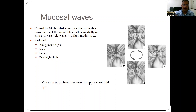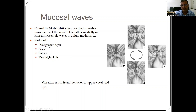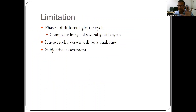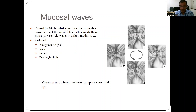The last parameter is the mucosal wave, a term coined by Marsoshita. During the glottic cycle, vibrations travel from the lower part to the upper lip of the vocal fold in the form of a wave, resembling waves in a fluid medium — hence called the mucosal wave. Mucosal waves may be absent or reduced in cases of malignancy, cysts, scar, sulcus vocalis, or when speaking at a very high pitch. If a pathology is found and we want to prognosticate, stroboscopy with assessment of mucosal wave presence or absence is very informative.